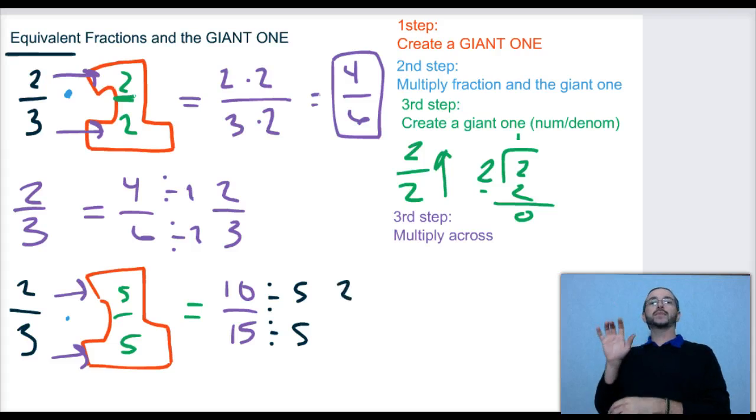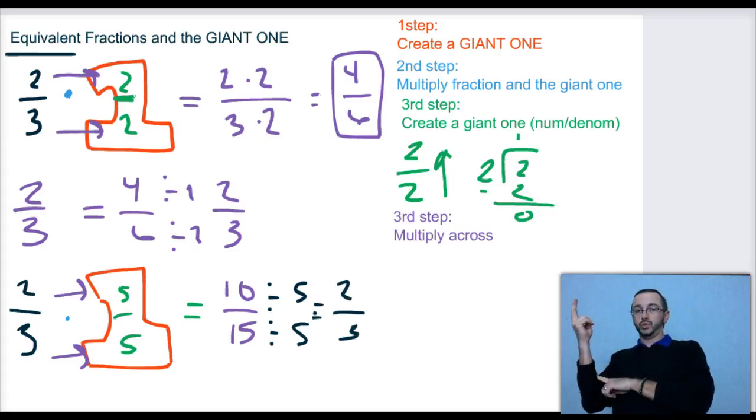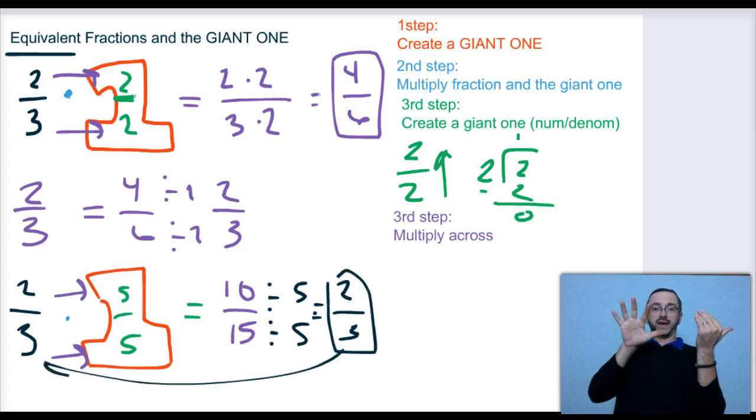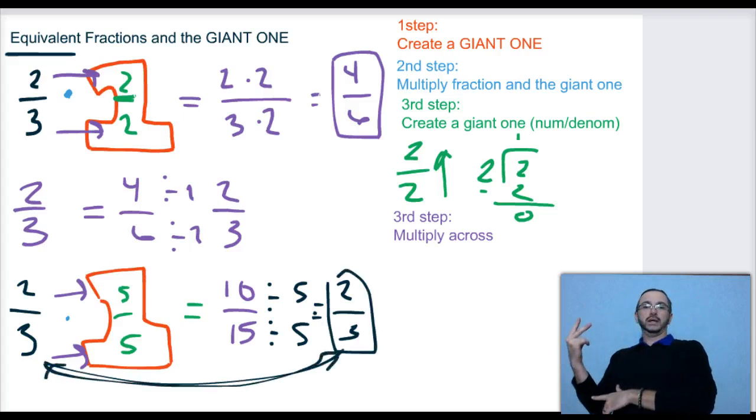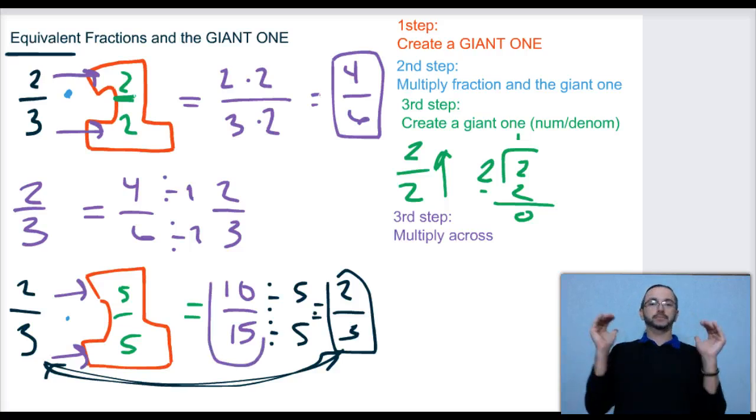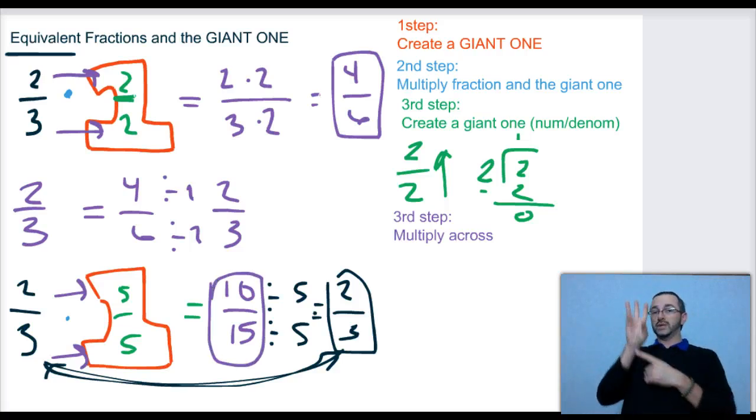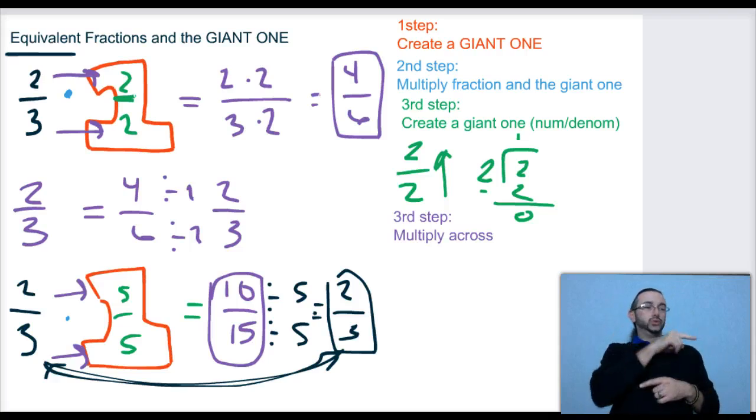5 can go into 10 twice, and 5 can go into 15 three times. I've made two equivalent fractions. So 4/6 and 10/15 are both equivalent to 2/3.